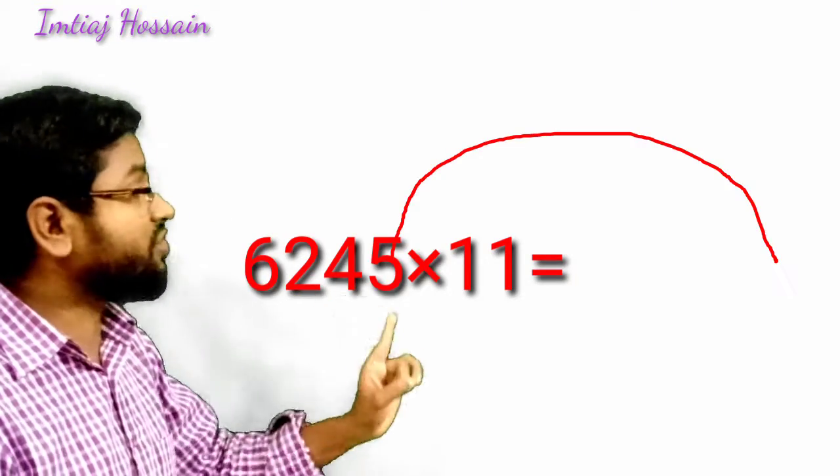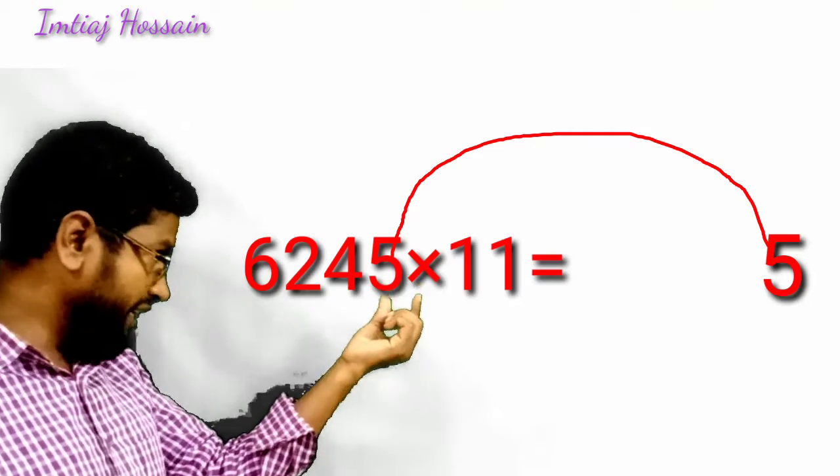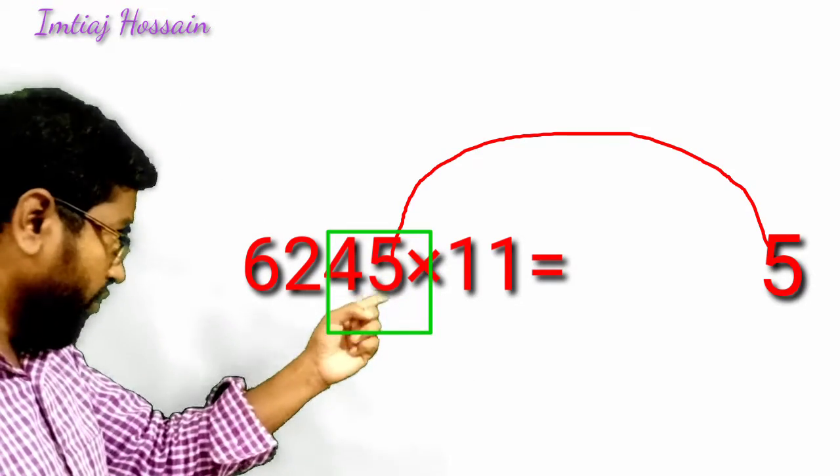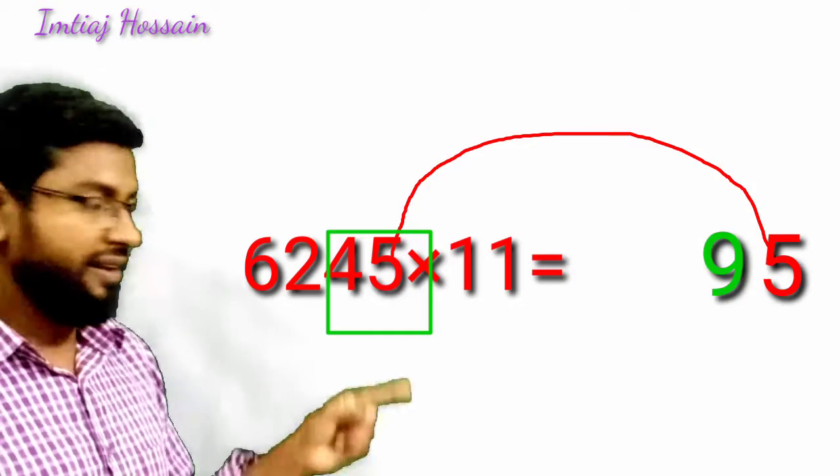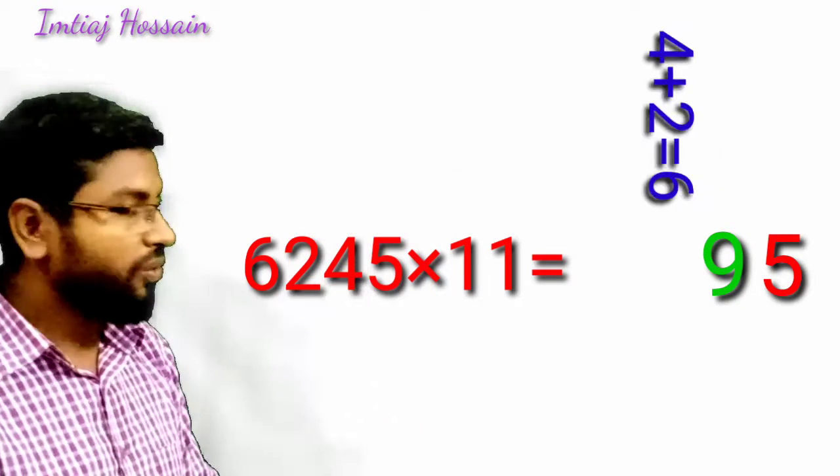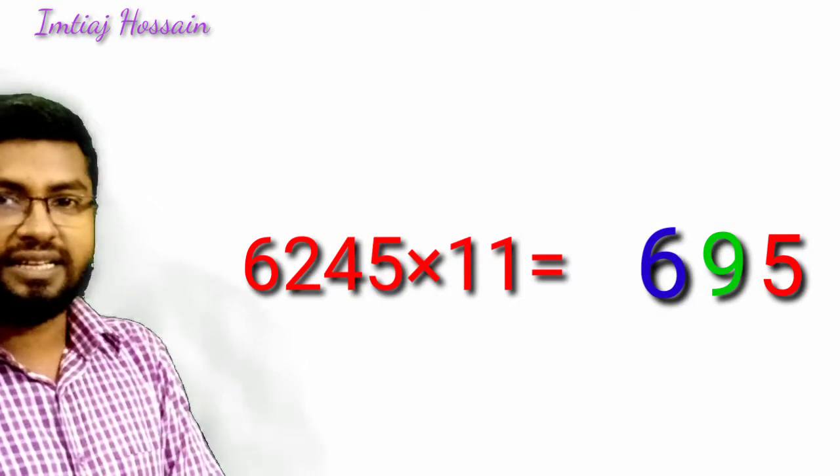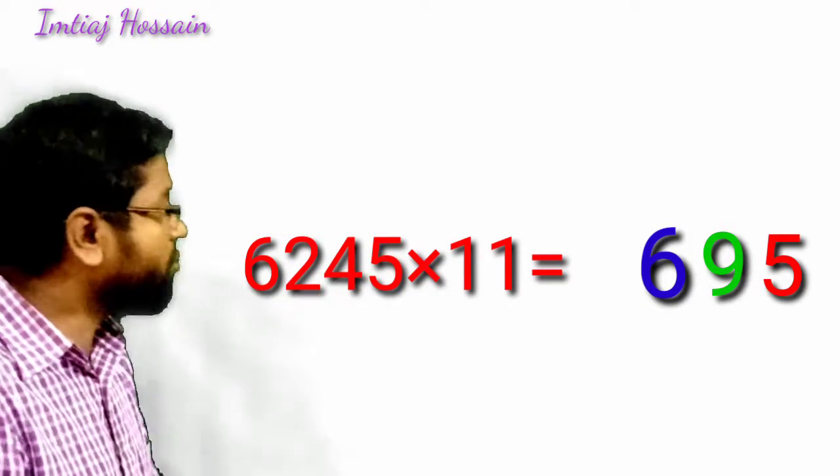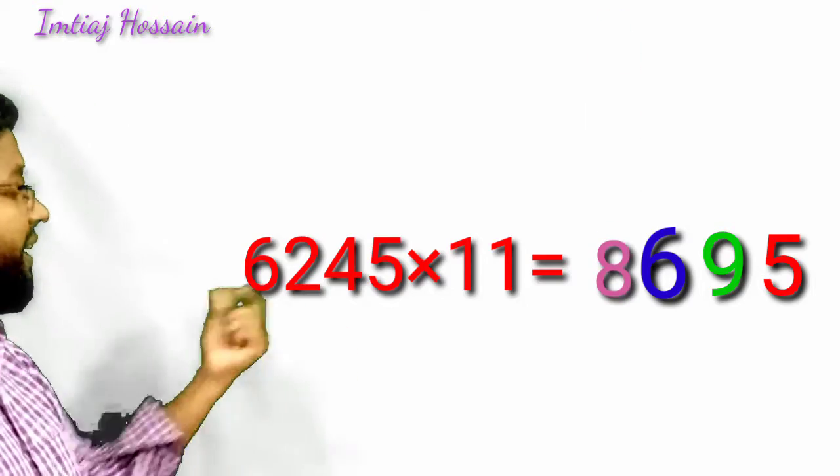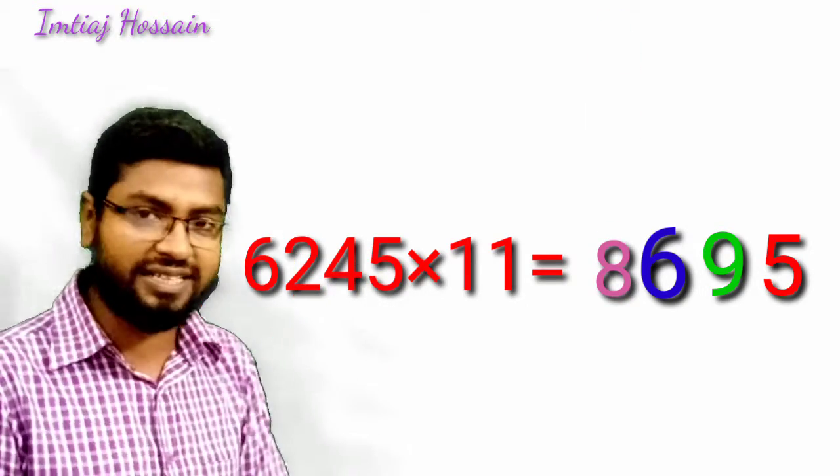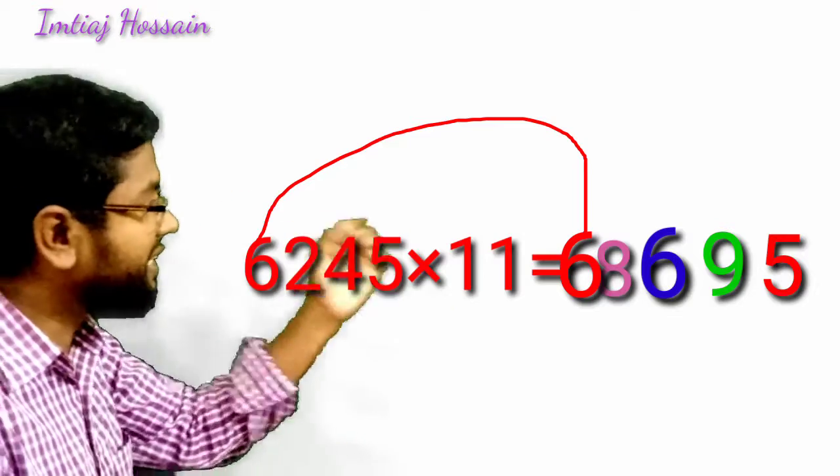Look, the last digit is 5, I write 5. Then for these two digits, I will add 4 and 5. What will it be? 9. 9 will be the second digit. Then I will add 2 and 4. If I add, what will it be? It will be 6. The third digit will be 6. Now 6 and 2, I will add them. What will it be? 8. There will be 8. And the last digit is 6, I will put 6 here. So what will be the answer? 68,695. Very interesting.